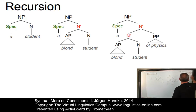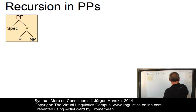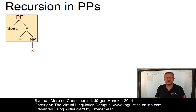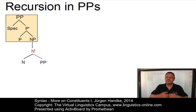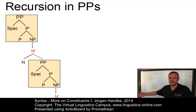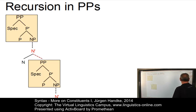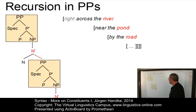The situation is slightly different with prepositional phrases. Here, it is not P-bar that can be expanded, but the N-bar node, which is part of the noun phrase, that realizes recursion — because a possible daughter of N-bar is the prepositional phrase itself. And this prepositional phrase, of course, contains another noun phrase with another N-bar, and so on and so forth. These principles allow us to generate constructions such as 'right across the river near the pond by the road.'